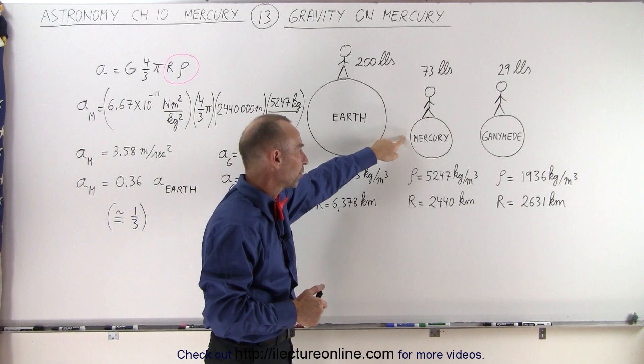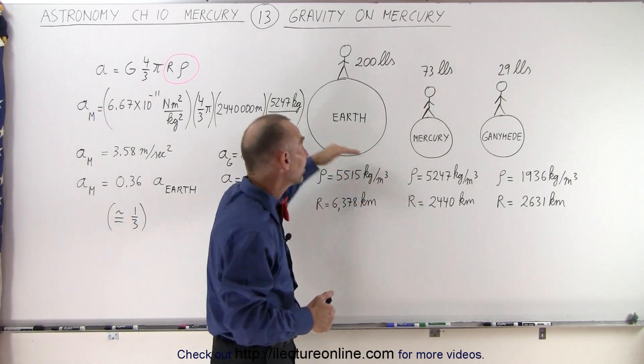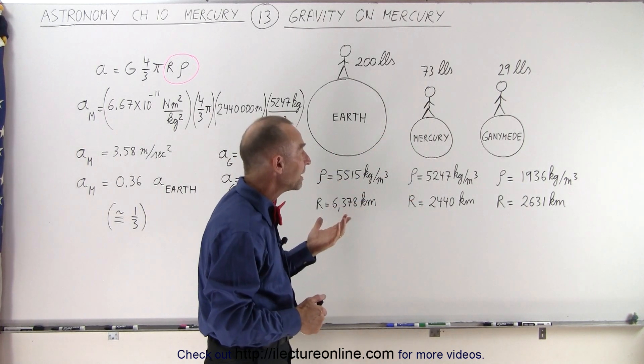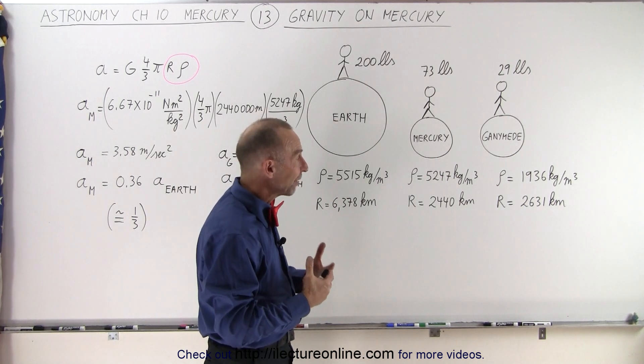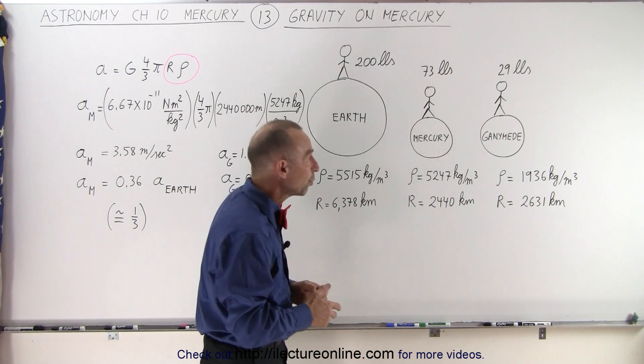So it has a larger percentage of metal, but it is still less dense than the earth. Now Ganymede has a very small amount of metal and a fair amount of ice mixed in with the rock.